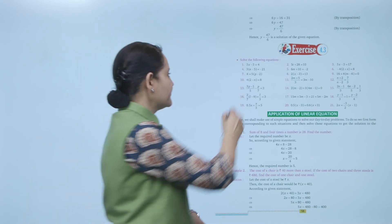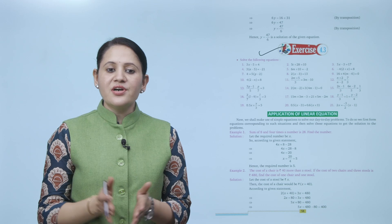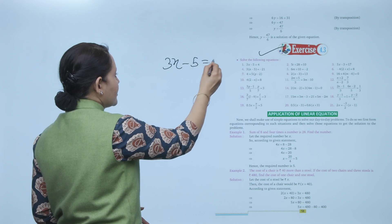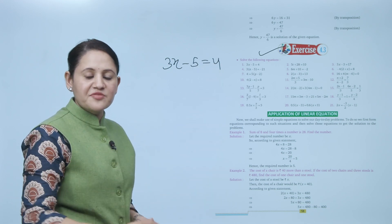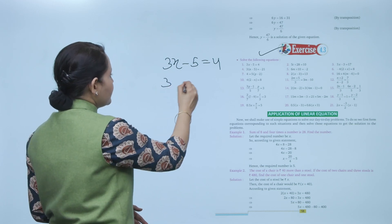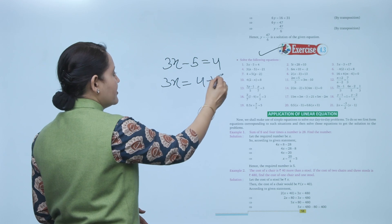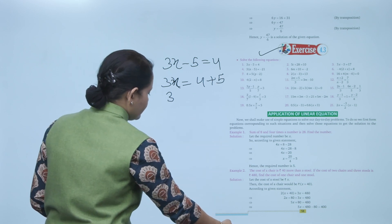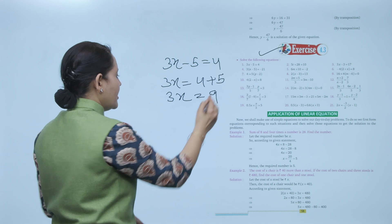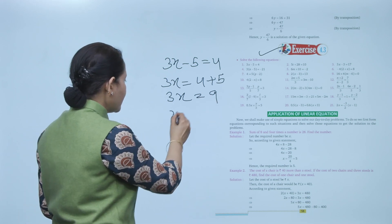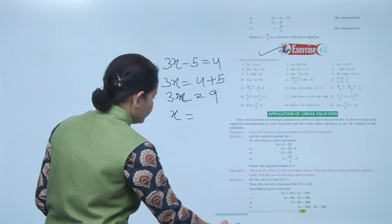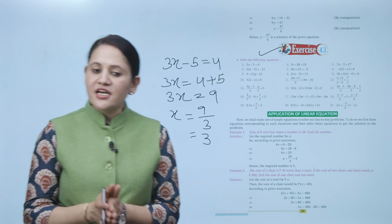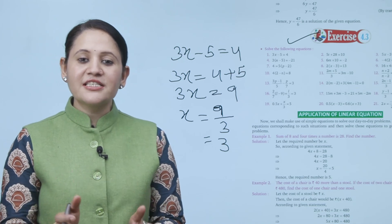Next is Exercise 4.3: solve 3x minus 5 equals 4. We need to find the value of x. We transpose 5 to the other side, changing its sign, giving 3x equals 4 plus 5, that means 3x equals 9, so the value of x equals 9 upon 3, which is 3.